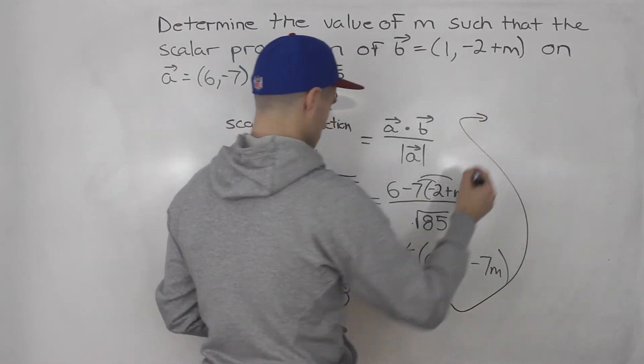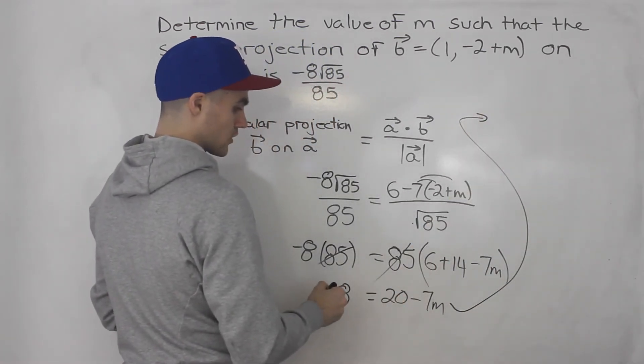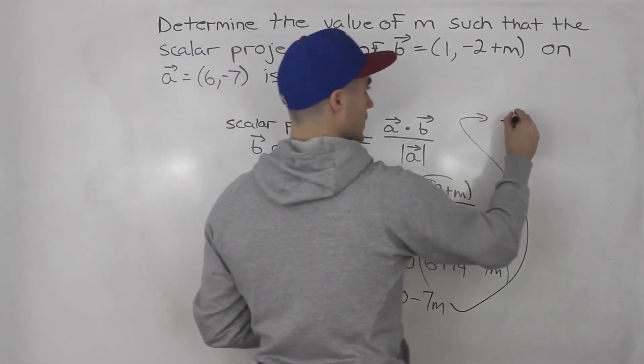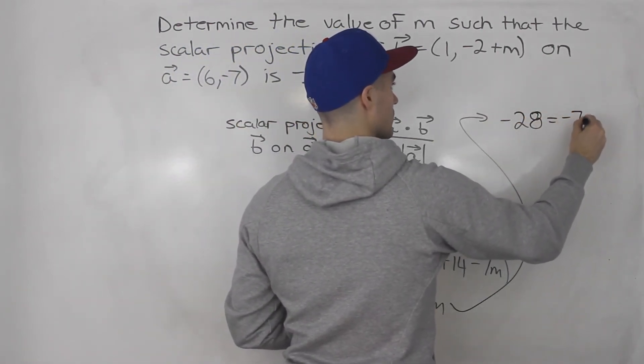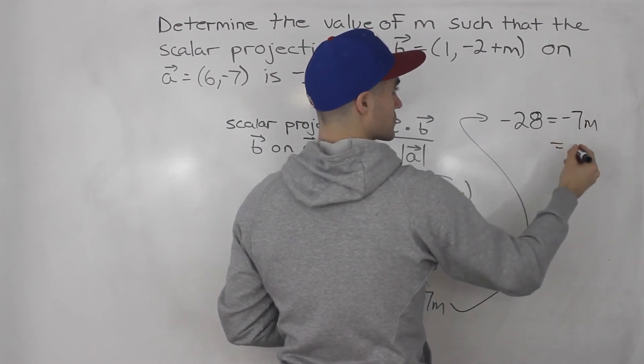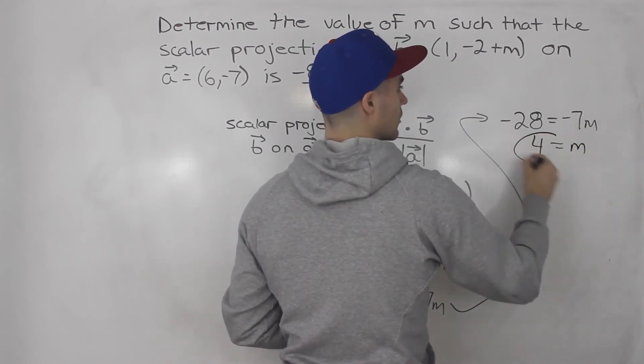Continuing this up here, bring the 20 over. So -8 minus 20 is -28 equals -7m. Divide both sides by -7, m is 4.